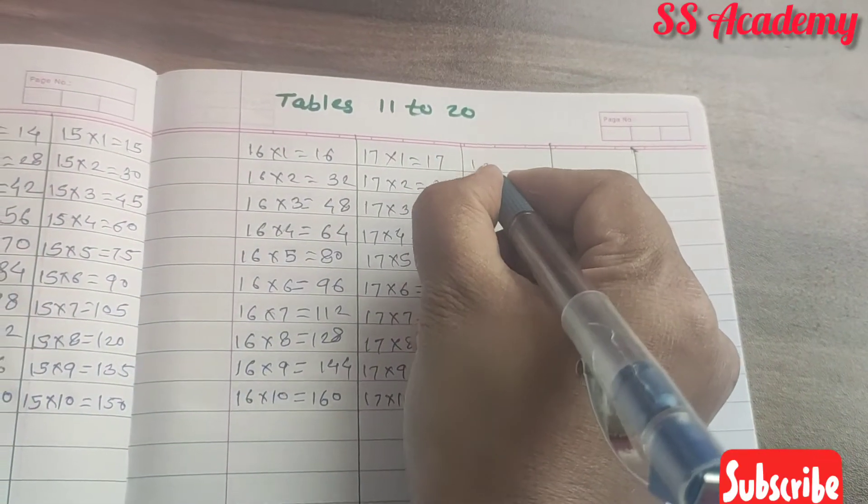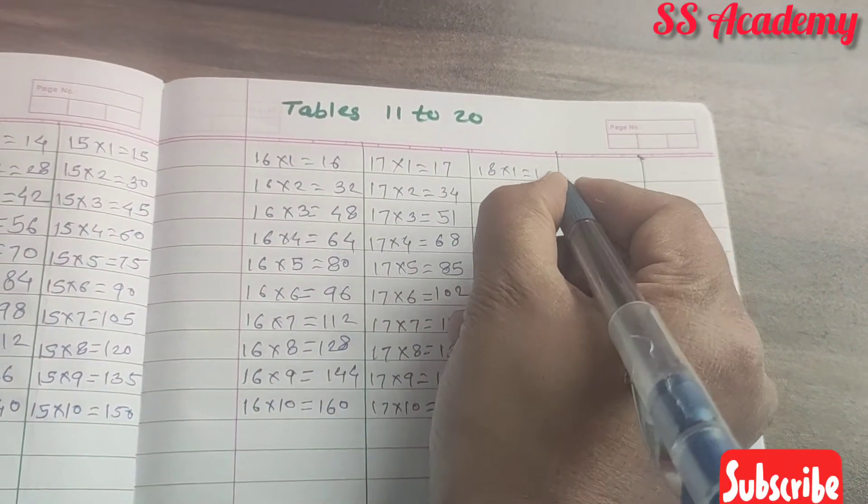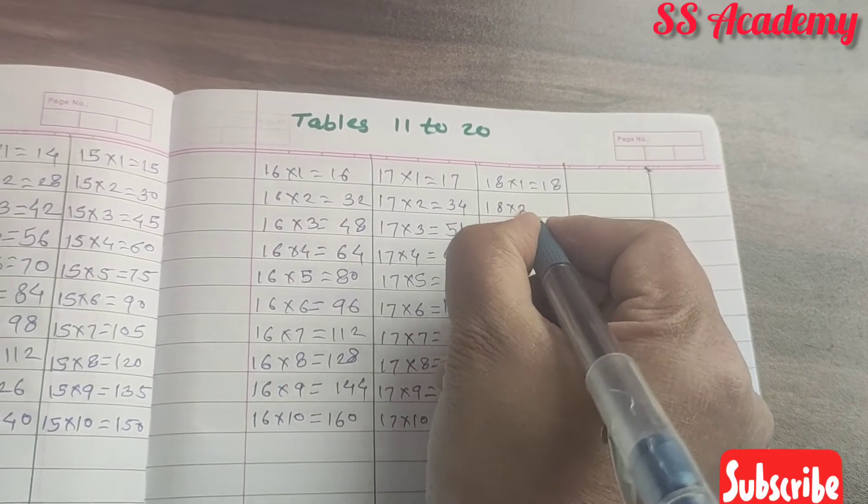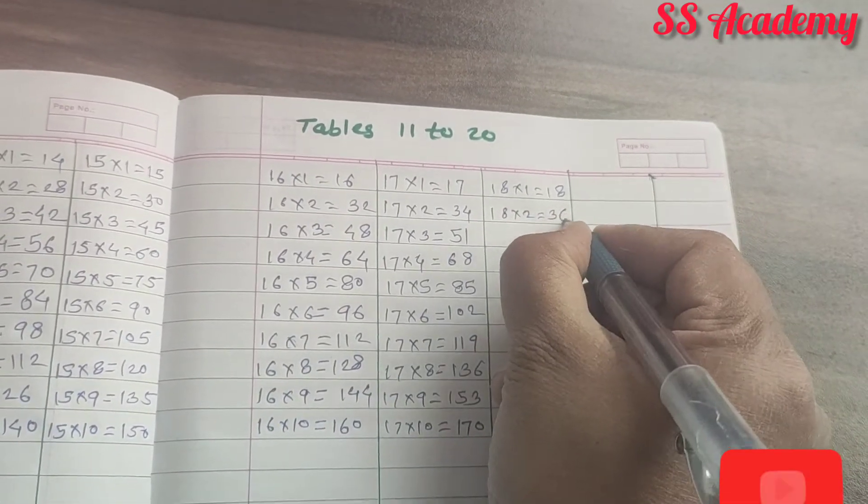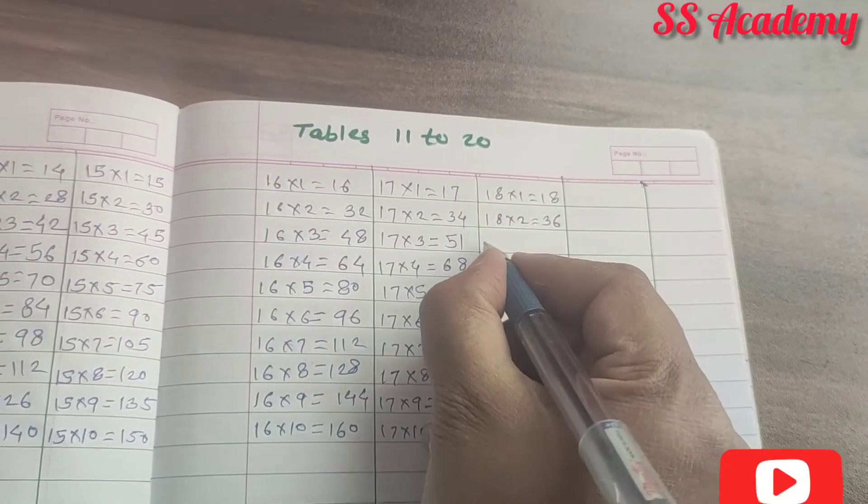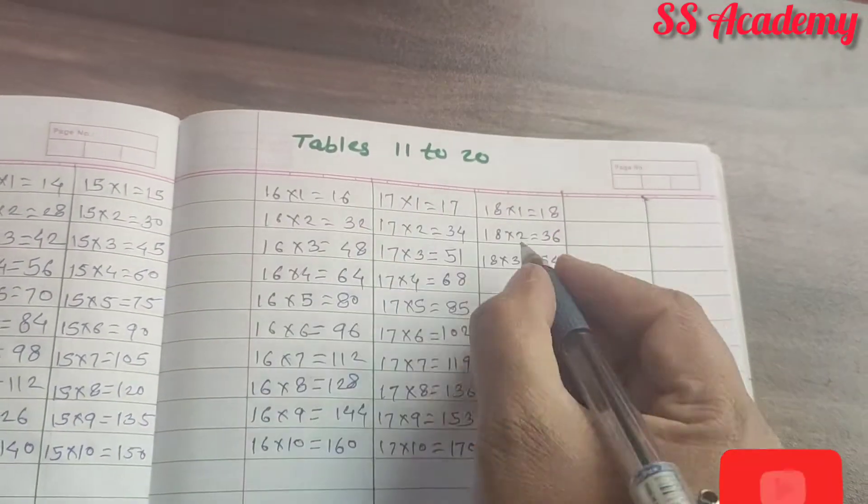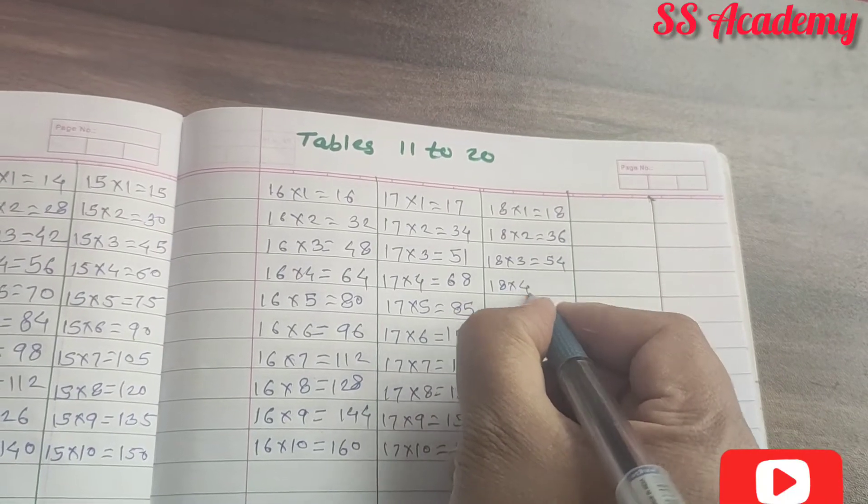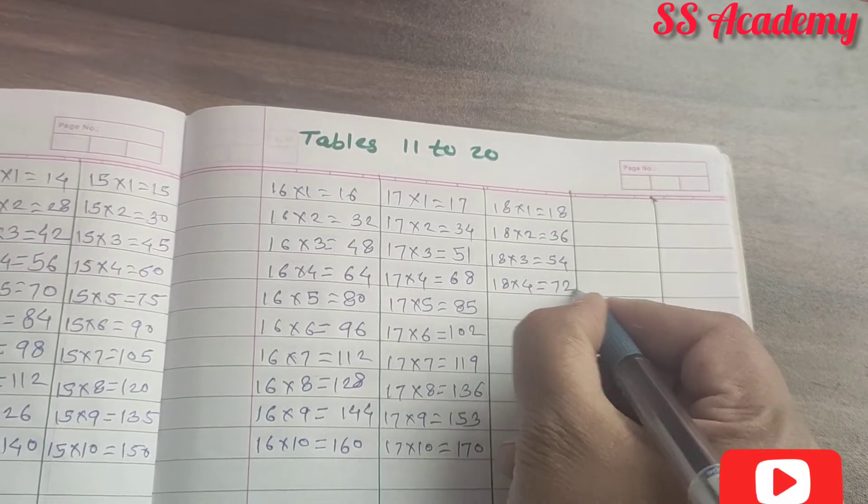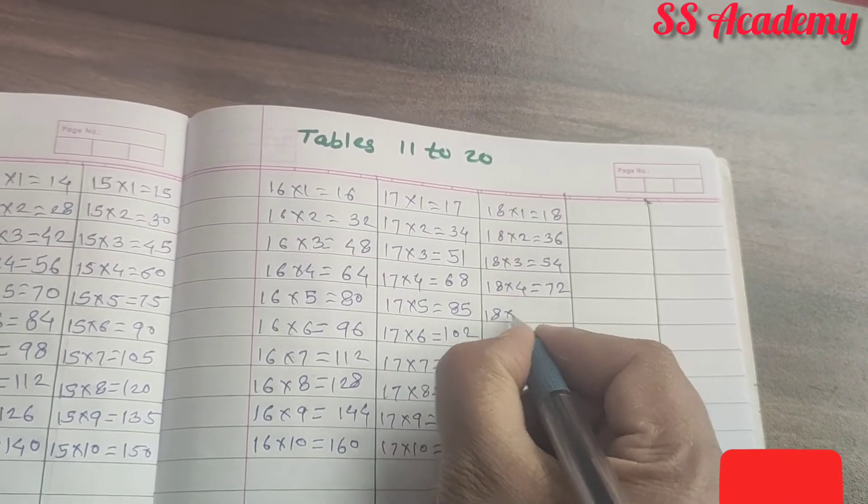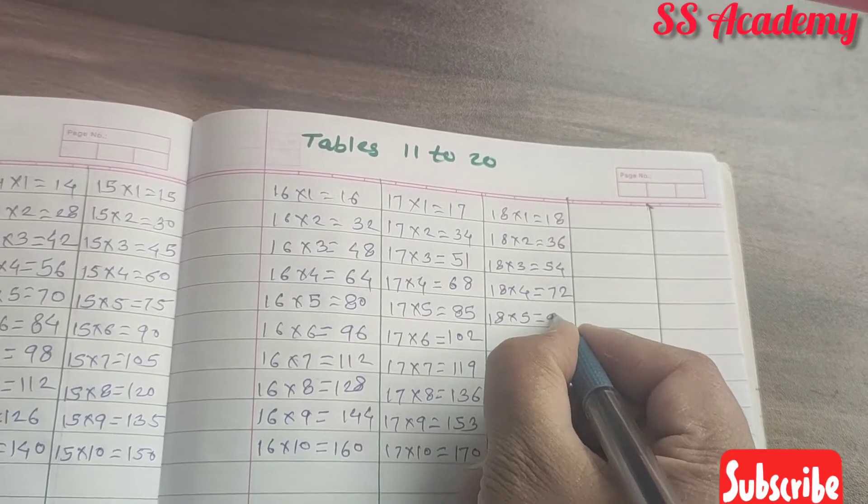Next 18. 18 times 1 is 18. 18 times 2 is 36. 18 times 3 is 54. 18 times 4 is 72. 18 times 5 is 90.